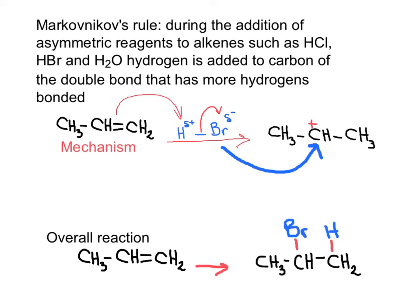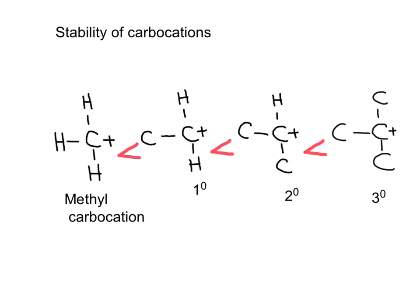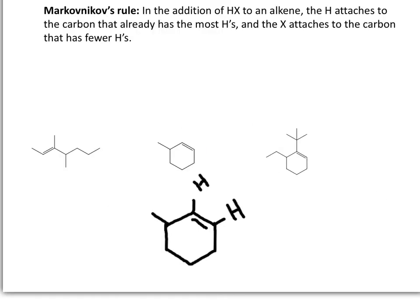We can see that the hydrogen was added to the carbon that initially had more hydrogens. We usually paraphrase this as 'the rich gets richer' — the carbon that is rich in hydrogens gets richer in hydrogens. The major product of electrophilic addition to a carbon-carbon double bond will be the one that produces the most stable intermediate carbocation. The methyl carbocation is less stable than a primary, which is less stable than a secondary, which is less stable than a tertiary carbocation.